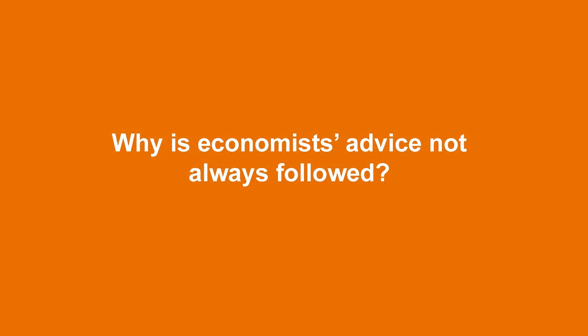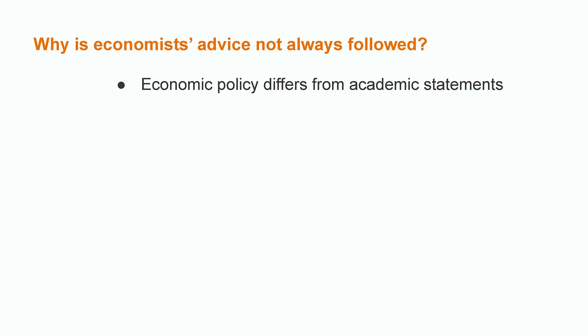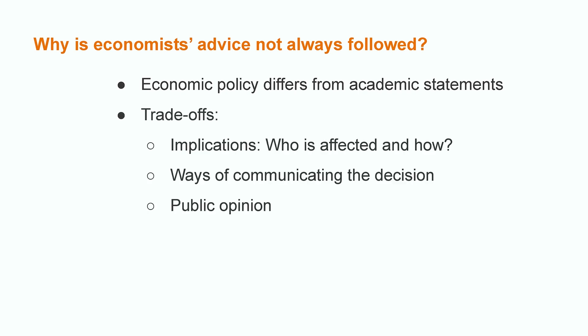Given that decision-making involves a scientific method and advice is based on evidence, why is it that economists' advice is not always followed? First, economic policy differs from academic statements. Textbooks and economic models seek to explain reality but usually omit the actual process of implementing a policy. Public administration involves many departments with certain processes that take time — bureaucracy and red tape — which may affect the policymaker's plans and the policy's impact. Economists also aim to suggest the best policy option based on conditions such as feasibility, context, trade-offs, and their own judgment.